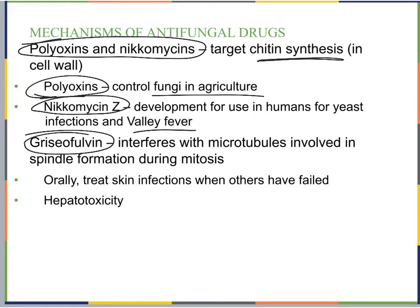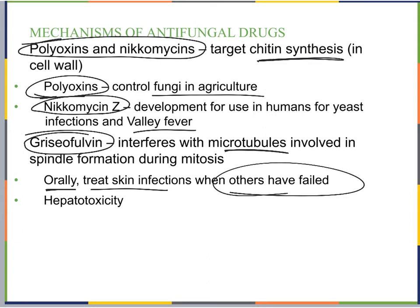Griseofulvin interferes with microtubules involved in spindle formation during mitosis. When the fungus tries to divide and pull chromosomes apart, griseofulvin interferes with microtubule building. If they can't go through mitosis, they can't make copies of themselves. It's given orally to treat skin infections when other treatments have failed. Since it affects microtubule formation — something our cells also need — it causes significant hepatotoxicity and can damage our cells as well.